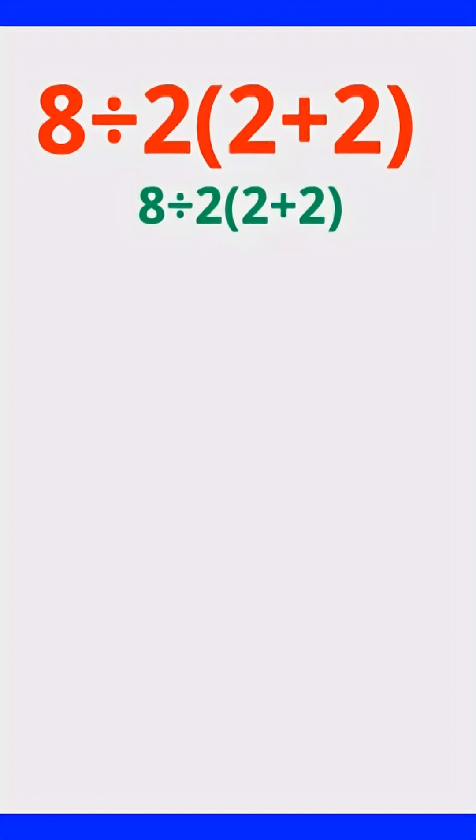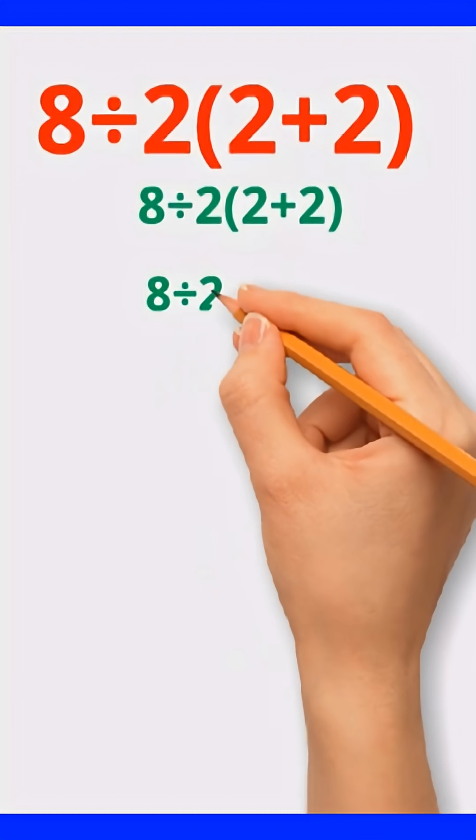Step 1. Simplify the bracket. Inside the bracket, 2 plus 2 equals 4. So we now have 8 divided by 2 times 4.